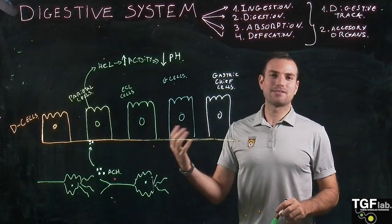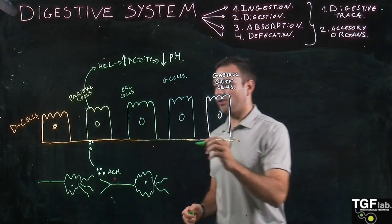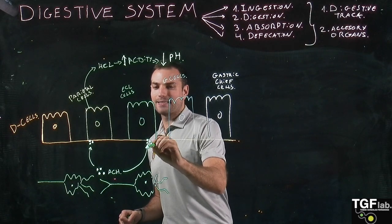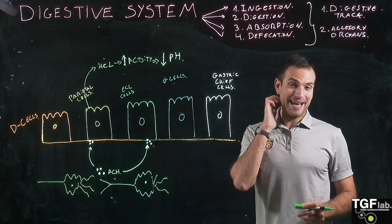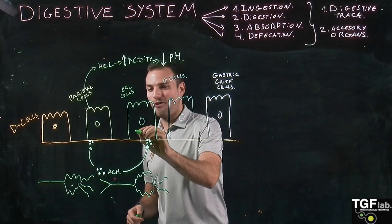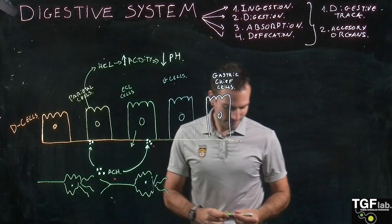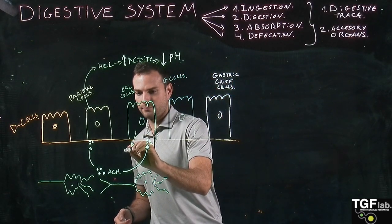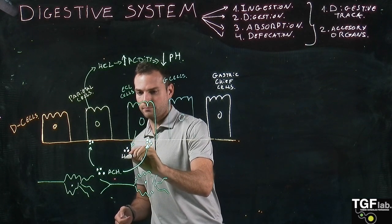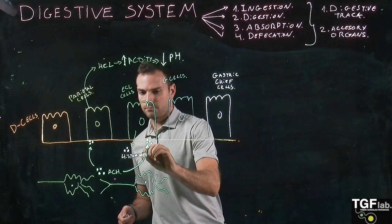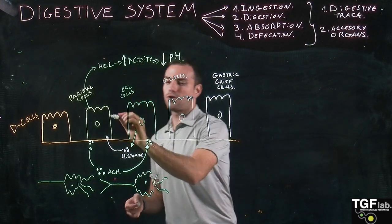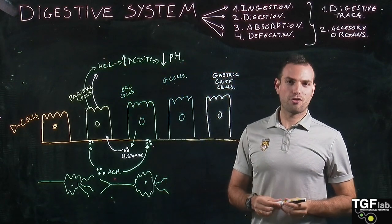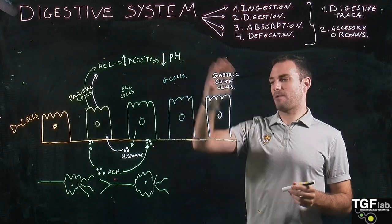This acetylcholine is not only going to act on the parietal cells — it also acts on the ECL cells. It binds to the ECL cells, which get activated and secrete histamine. This histamine also activates the parietal cells and further increases the secretion of hydrochloric acid, lowering the pH even further.